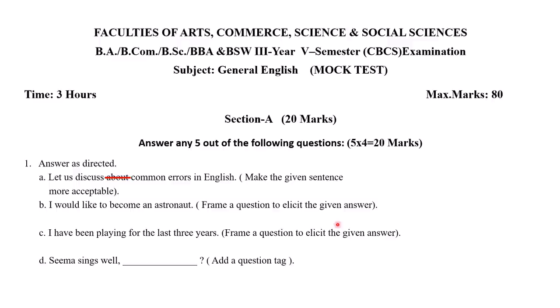B: 'I would like to become an astronaut.' Frame a question to elicit the given answer. The question is: 'What would you like to become?' C: 'I have been playing for the last three years.' Frame a question to elicit the given answer. The question is: 'How long have you been playing?'